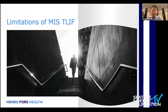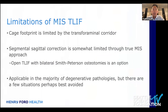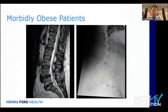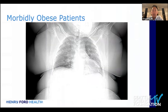Closing with some limitations of the MIS TLIF: despite advances in technology, our cage footprint is still limited by the transforaminal corridor, and there's not much we can do about that. If you're looking for significant sagittal correction, especially at L5-S1, your ALIF is still the best bet. Segmental sagittal correction is somewhat limited through a true MIS TLIF approach. You can take advantage of posterior osteotomies using the cage as a fulcrum, but these techniques become less minimally invasive.